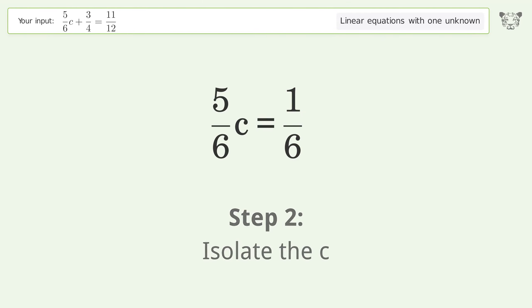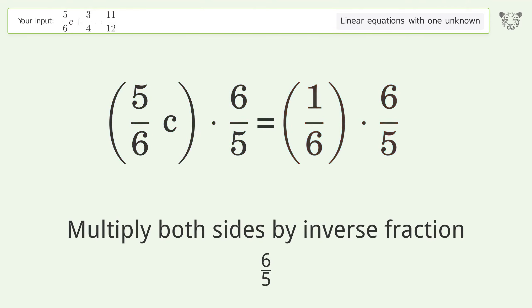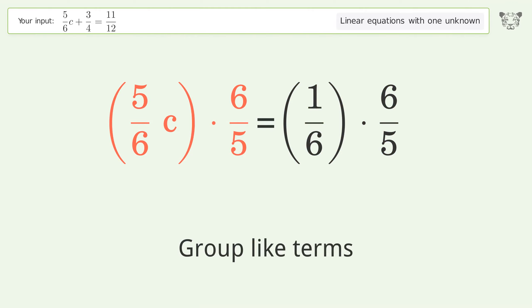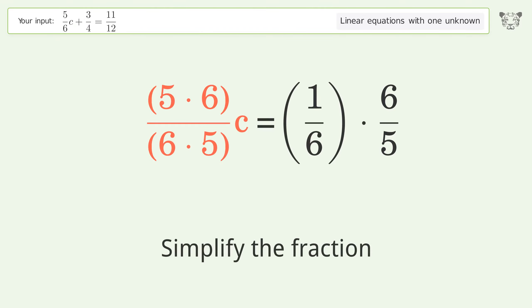Isolate the c. Multiply both sides by inverse fraction 6 over 5. Group like terms. Multiply the coefficients. Simplify the fractions.